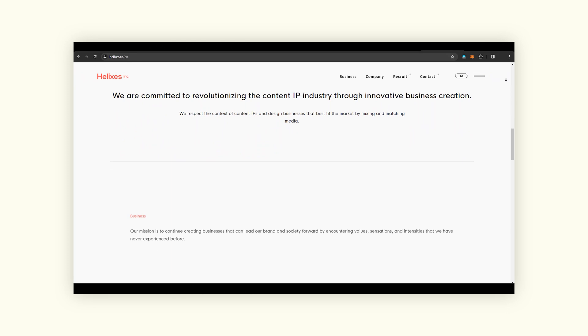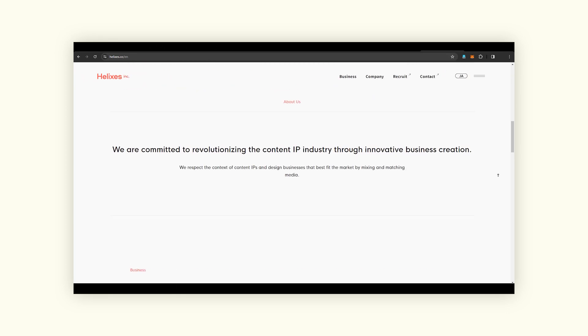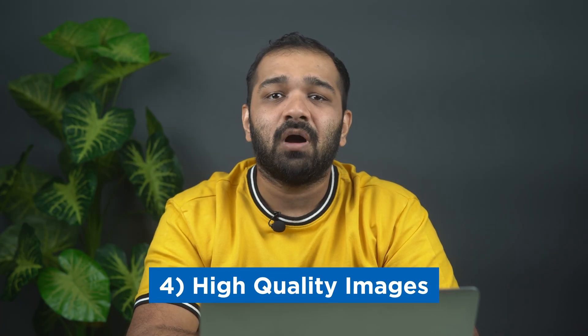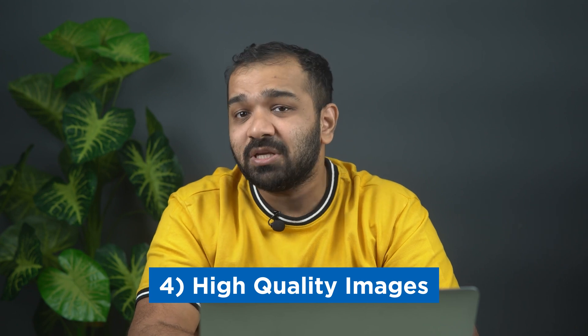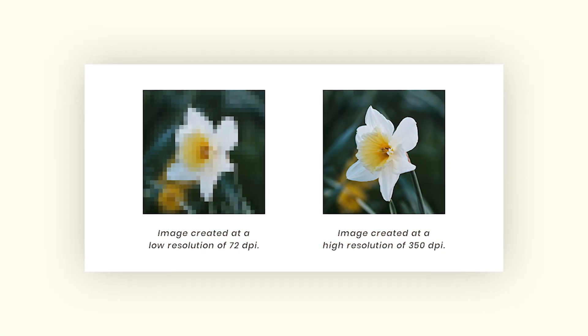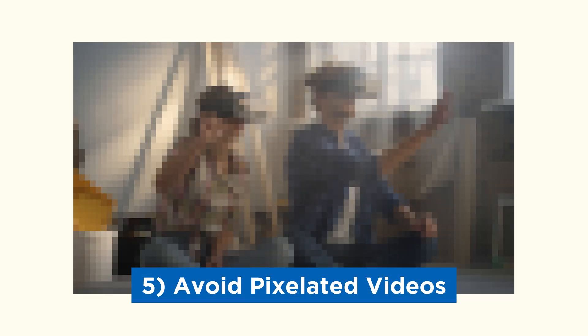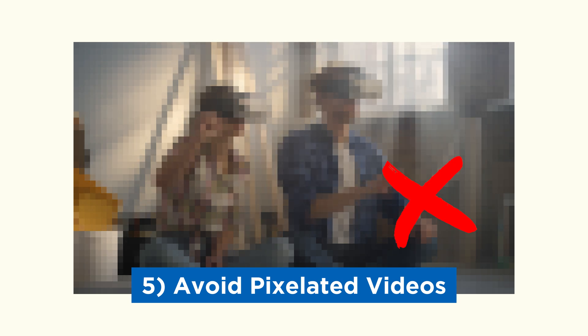You should also consider high quality visuals. Apart from creating high quality content, you'll also need to offer high quality images in your articles. Higher resolution images are more likely to catch the attention of a reader on Discover compared to a low-res image. Pixelated videos are a strict no-no since they won't help to provide a good user experience.